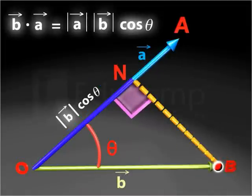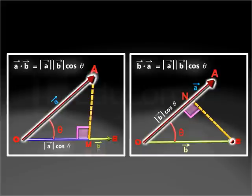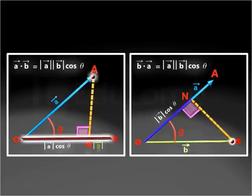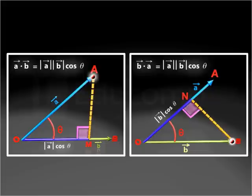Similarly, the dot product of vector B and vector A can also be obtained by multiplying the magnitude of vector A and the scalar component of vector B along vector A. The dot product of vector A and B can be obtained by either multiplying the projection of vector A on vector B by the magnitude of vector B, or by multiplying the projection of vector B on vector A by the magnitude of vector A. This helps us conclude that the dot product of two vectors is commutative.